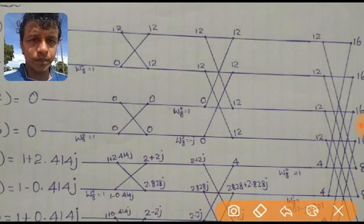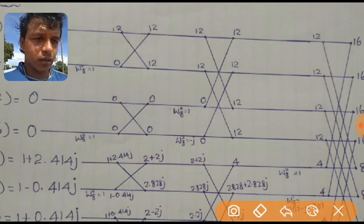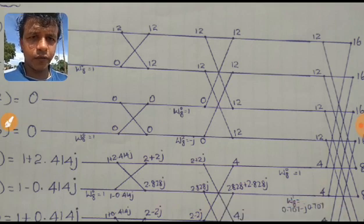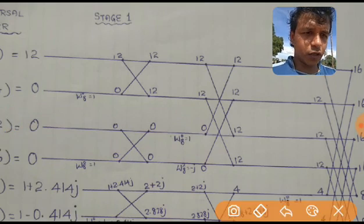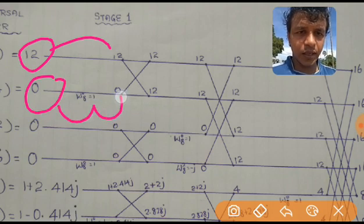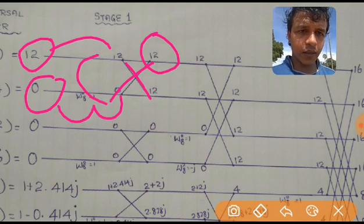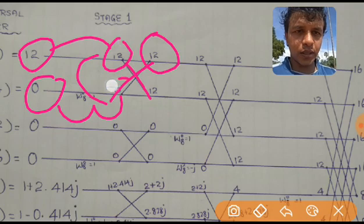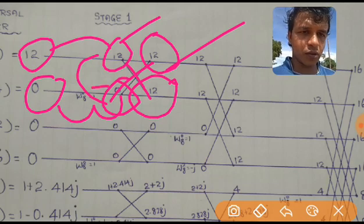The value of b is 0 here. When we multiply b by the twiddle factor the answer is 0. We take that result here and the value a is taken without any change. In the first stage we are not making any change to value a — it is taken directly — and the value b is multiplied with the twiddle factor. This is the first butterfly. This value is obtained by adding a plus b·W_N^k, so 12 plus 0 is 12. The lower branch is obtained by subtracting: 12 minus 0 is 12.